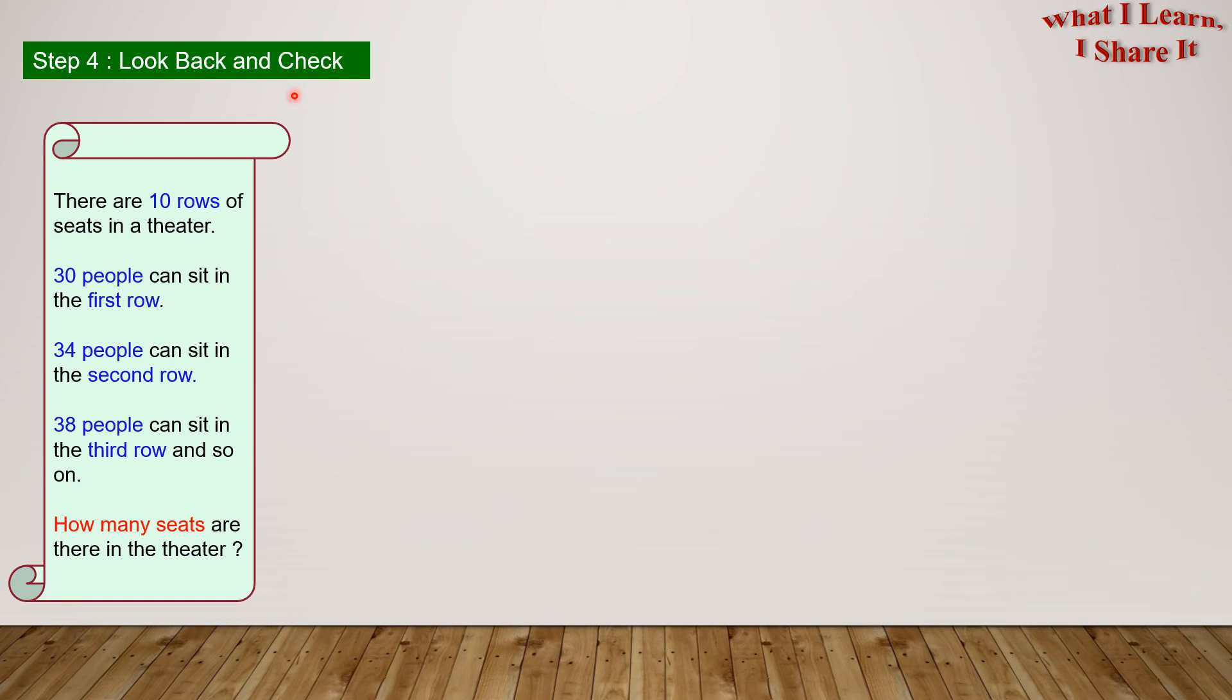Step 4, look back and check. Let's go through a couple of checks here. Have we found the pattern correctly? Yes, we have. Have we calculated the number of people in each row correctly? Yes, we have.